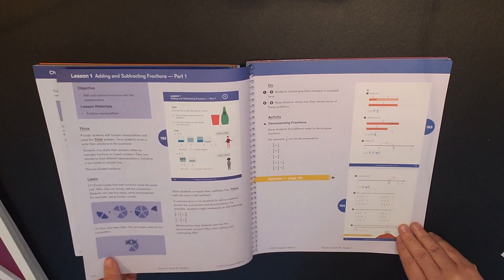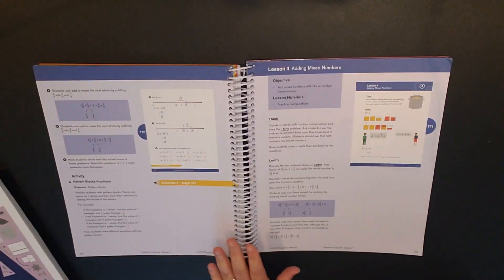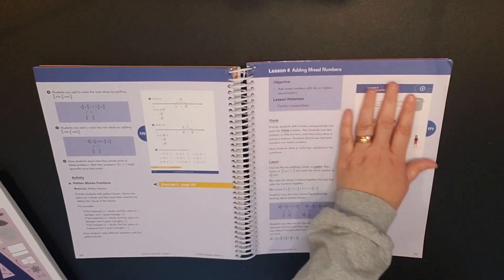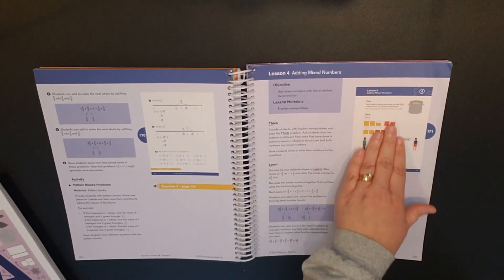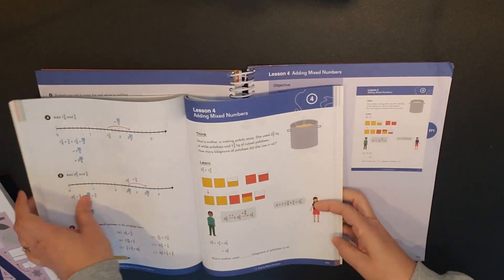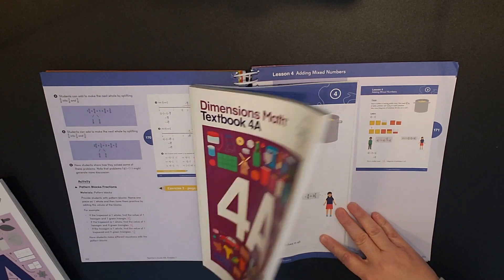So I'll get into that when we go through the lesson and then it talks about the activities. So you have the chapter opener and then you go into lesson 1. Something to notice is that the teacher's guide is in full color.